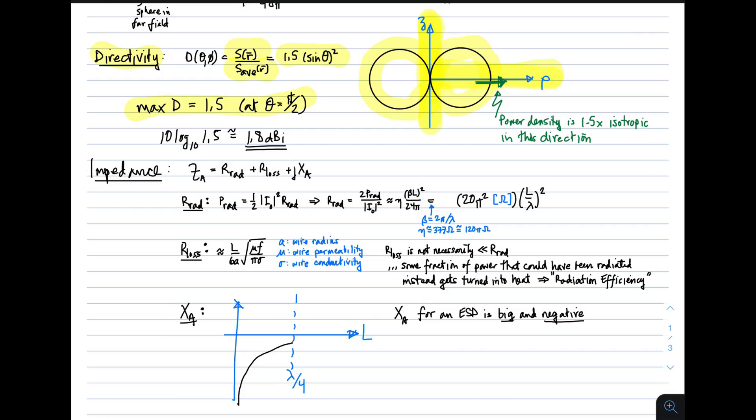Of course, we like to see directivity expressed in dBi normally. We simply take 10 log 10 of 1.5. And we find that the directivity of an electrically short dipole is about 1.8 dBi, whereas isotropic would be 0 dBi.